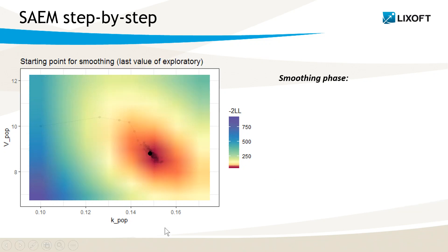So that's a great first step to get close, but we now need to really find the precise maximum likelihood. For that, we have the second smoothing phase. I have highlighted the starting point for the smoothing phase. It's just the last point of the exploratory phase. And I will hide the exploratory phase to see a bit better what is going on.